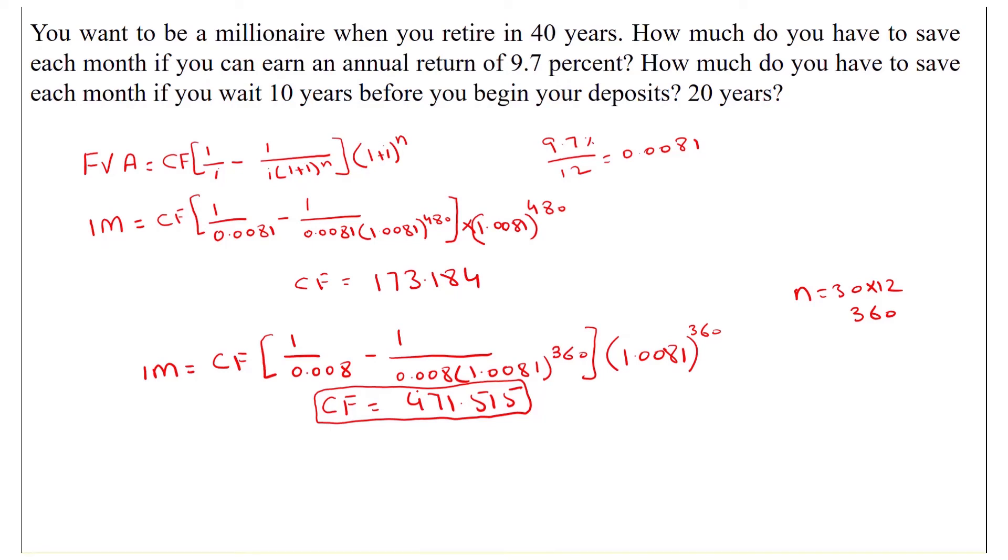In the third part, the question is what if we wait for 20 years. So n will be 20 multiplied by 12, that is 240. The remaining things will be the same.